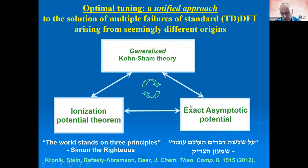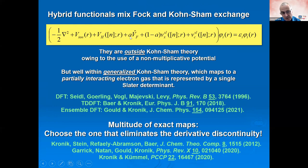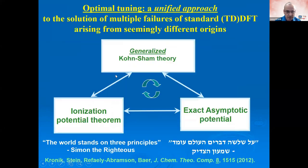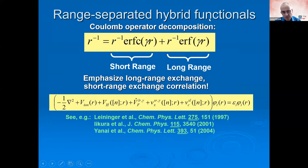This flexibility raises the question of which mapping to choose to get the band gap right. This leads to the second principle: insisting on the exact asymptotic potential, which is 1/r. When describing electrons being extracted from or added to a system, they must feel the exact asymptotic potential. Standard functionals don't do that, and getting it with a hybrid functional requires 100% Fock exchange in the long range — generally a bad idea because it creates poor balance between exchange and correlation in approximations.